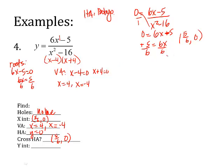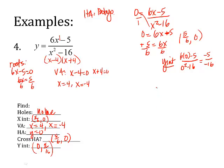The y-intercept is last. I put zero in for every x: 6(0) − 5 over 0² − 16 = −5 over −16, which is positive. So the y-intercept is at (0, 5/16). I've found all the pieces of the puzzle — let's put it together.